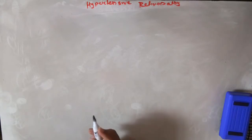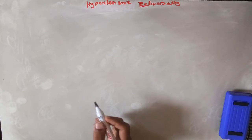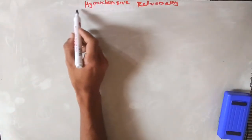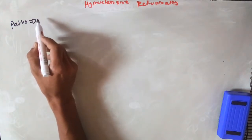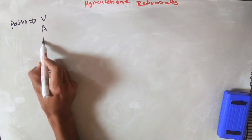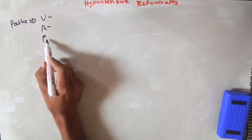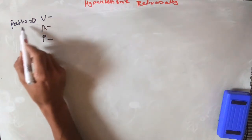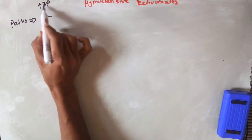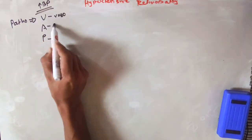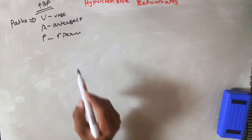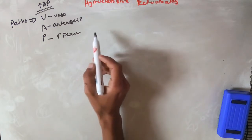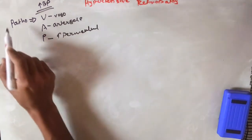Hypertensive retinopathy is a spectrum of retinal vascular changes pathologically related to persistent microvascular damage. The pathogenesis behind hypertensive retinopathy involves three main factors: vasoconstriction, arteriosclerosis, and increased capillary permeability. Raised blood pressure causes these changes, which result in leakage from blood vessels.